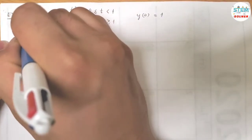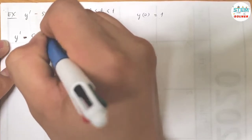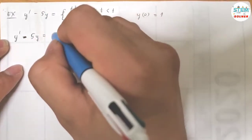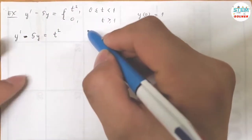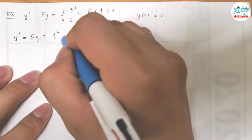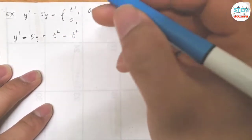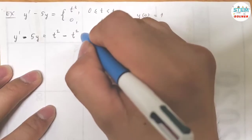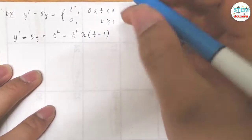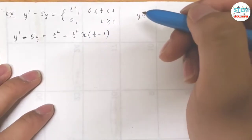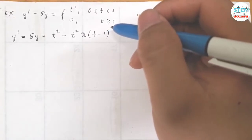On the left side, just rewrite it. On the right side, we start off with t squared, and then at t equals 1 it becomes 0. So to get rid of t squared, we need to subtract t squared — and at this point the unit step function comes into play, which is u(t minus 1). That's how you rewrite it in one line.